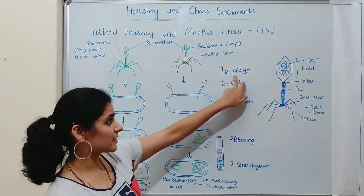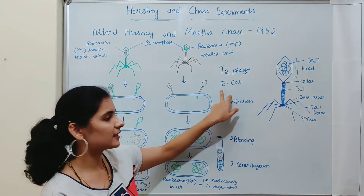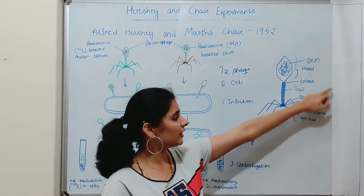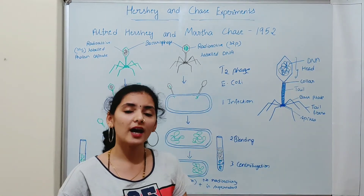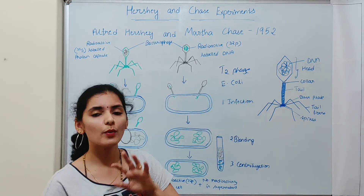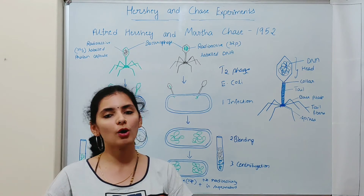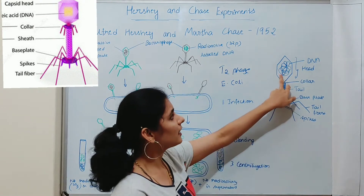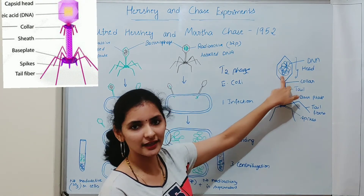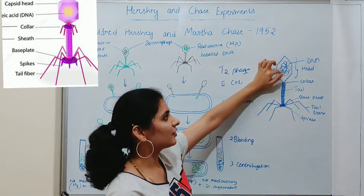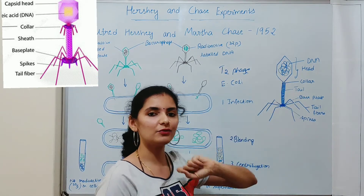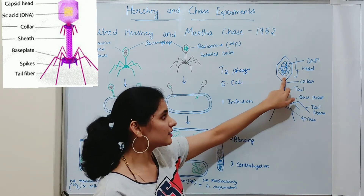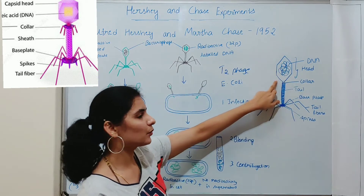In this experiment, the virus T2 phage infects the bacterium Escherichia coli. Similar to other viruses, T2 phage is a very simple organism having only two components: DNA and protein. As you can see in this diagram, the DNA is present at the center or core of the head region, and this DNA is found surrounded by a protein capsid.